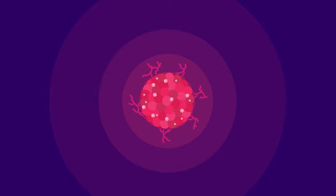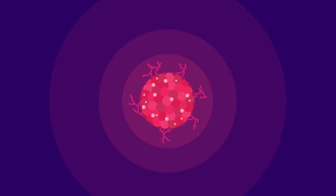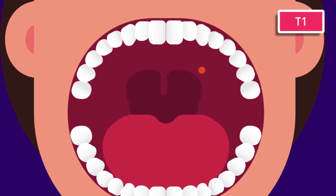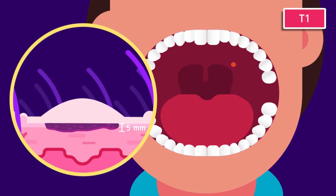Tumour, T. T describes the size and depth of the tumour area of the cancer. There are four main T stages of mouth cancer, T1 to T4. T1 means the cancer is contained within the tissue of the mouth, oral cavity, and it is 2 cm or smaller and 5 mm deep or less.